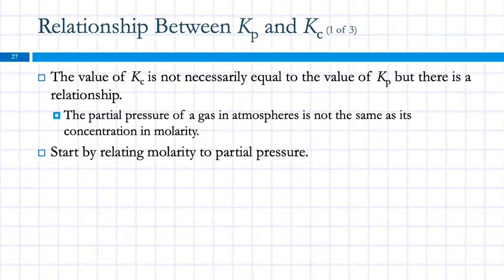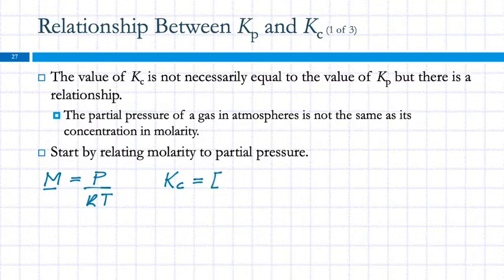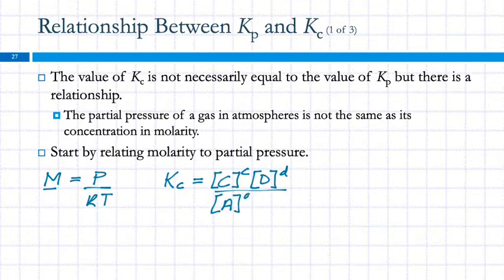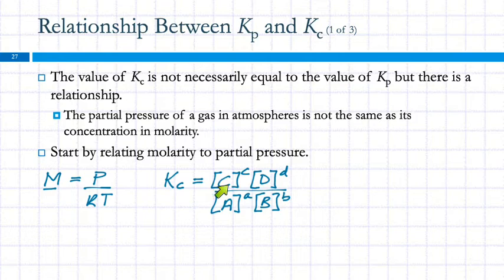We start by relating molarity to partial pressure. The molarity is equal to the pressure over RT — that's what we get from the ideal gas law: n over V is molarity. So if we have Kc equal to the concentration of C to the c power times D to the d power, over A to the a power times B to the b power, well, the molarity and the pressure are related. For the concentration of C, we could substitute in the pressure divided by RT, because those are equal.